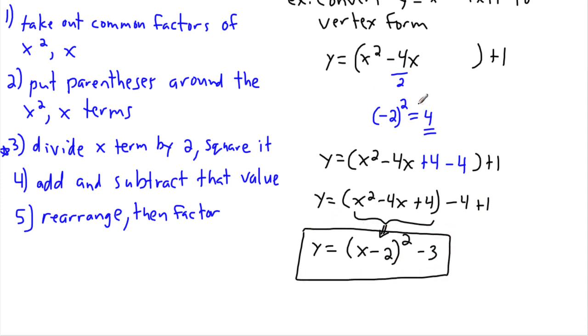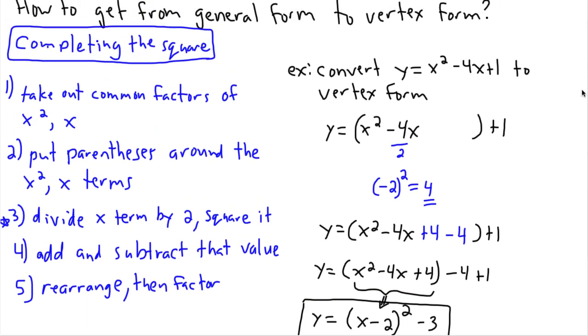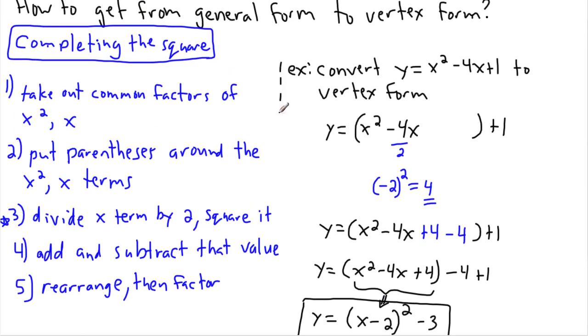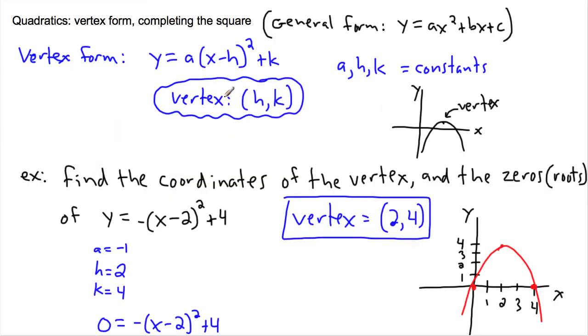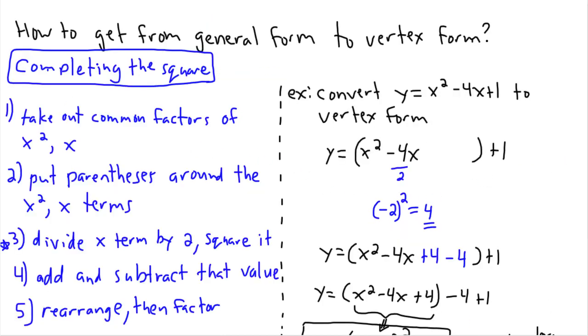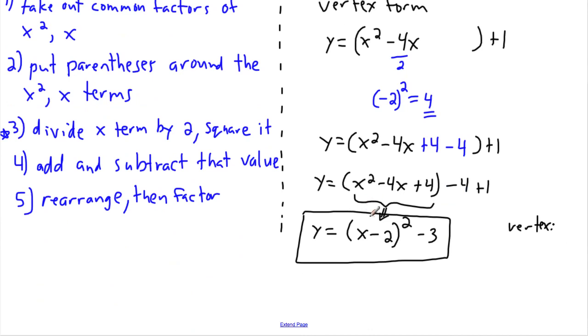Now why did we bother doing this? That's because remember, this makes it really easy to take a look at what the graph looks like. See, just from this I can tell right away that the vertex, if you remember before, the vertex is always h comma k in vertex form. So the vertex of this one is 2 comma negative 3.